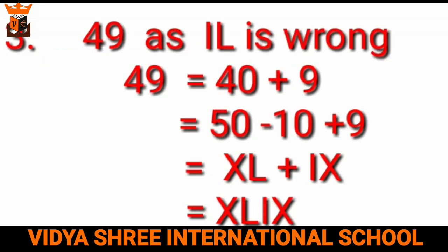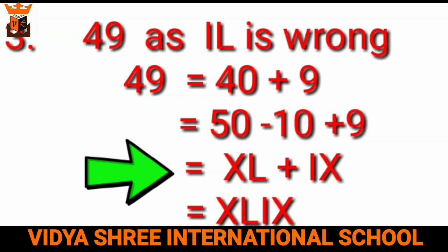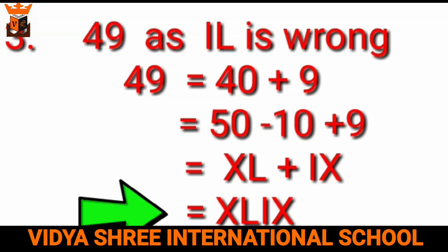One more example — let us take 49. We cannot write 49 as IL. We have to split the number 49 as 40 plus 9. For writing 40, we write XL, which means 50 minus 10, giving us 40. And for the number 9, we have the symbol IX. So the Roman numeral for 49 will be XLIX.